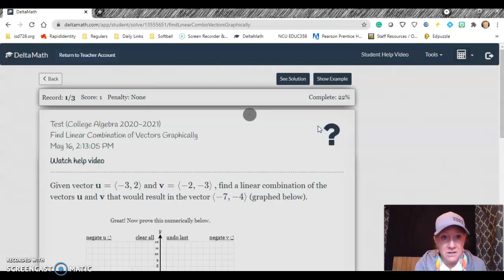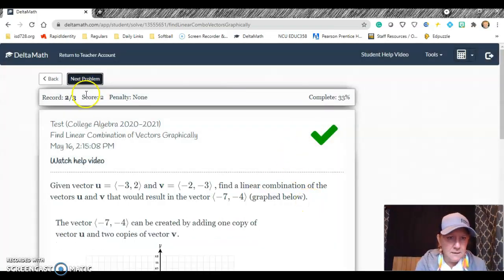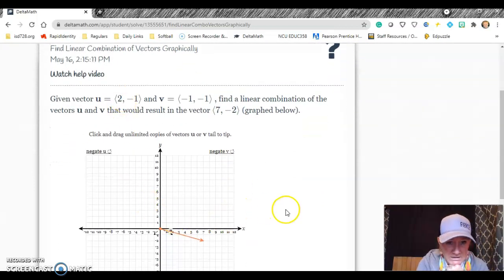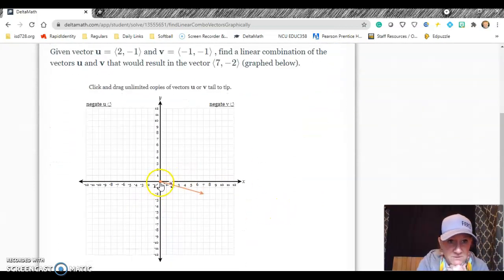Let's see what the next one looks like. I'm just going to try another one. Next problem. So here is v. So that's negative one, negative one. And here is u, which is two negative one. Okay.